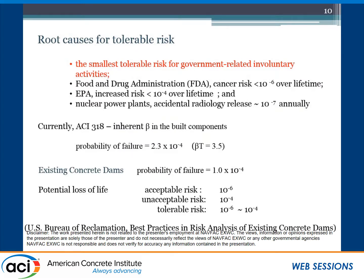The ACI 318 target beta value at the component level is 3.5, with a corresponding probability of failure of 2.3 × 10⁻⁴. For existing concrete dams, the failure probability target is about 1.3 × 10⁻⁴ — slightly lower, meaning more safe than a regular building. But when you look at the potential loss of life — the risk part, the consequence — the acceptable annual probability is 10⁻⁶. Between 10⁻⁶ and 10⁻⁴ is tolerable, where we must make a justification for what action to take. If larger than 10⁻⁴, something must be done.